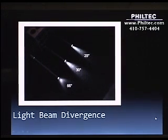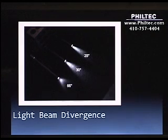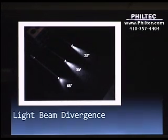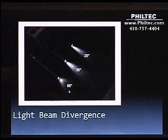One of those parameters is the NA of the fiber. This slide shows three different fibers in use. They have a numerical aperture or light beam spread of 25 through 66 degrees. With the 25-degree angle, that is the most collimated light beam — light would travel a larger distance than it would emanating from the 66-degree fiber. As you can see here, the light decays very quickly in that fiber.